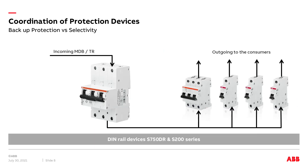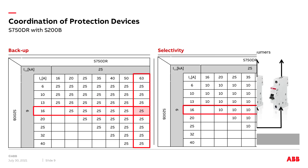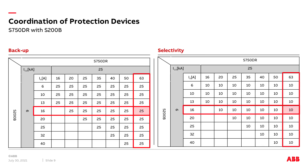In the last example, we will use an S750DR on the incoming side and the same MCB S200 on the outgoing side. Again, the incoming breaker is chosen at 63 amperes and the outgoing breakers at 63 amperes. The backup protection is a bit smaller at 25 kilo amperes compared to the other two examples. Due to the specific function of the S750DR, the selectivity level is 10 kilo amperes.